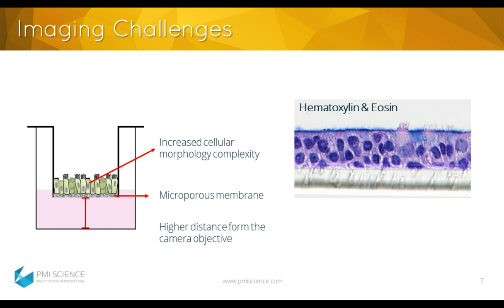Imaging this 3D model meant we had to overcome some technical challenges arising from the intrinsic physical properties of the cellular model. First, with the intention to avoid any additional manipulation of the insert, which would have made the process more time-consuming and labor-intensive, the intact insert including the transwell holder had to be imaged. This has two direct implications: first, a longer distance between the cells and the camera objective, and second, the presence of a microporous membrane. Both factors may interfere with the imaging process, potentially leading to decreased and less sharp signal detection. In addition, 3D tissue models are more complex — cellular morphology is no longer comparable to the 2D counterpart because of the added third dimension.